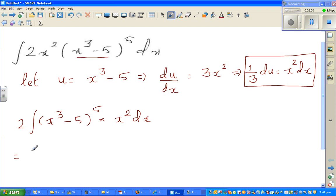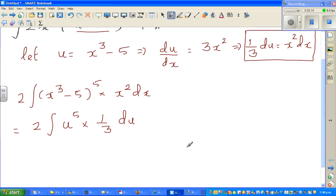So this becomes 2 times integration of, this is what? This is nothing but u. So u to the power 5 times, this is 1/3 du. Can you see how elegant it has become. So this is nothing but, you can factor this out. This is 2/3 times integration of u to the power 5 du.